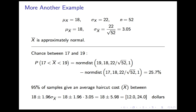The next question: between what two values would 95% of samples give an average haircut cost? That is 18 plus or minus 1.96 times the standard error of 3.05, which means you'd expect it to come between $12 and $24. If my different classes could be treated as simple random samples, I should expect that 95% of the time I'd get an answer between $12 and $24 for the average.